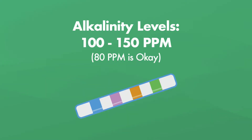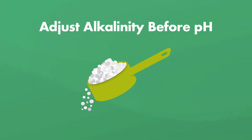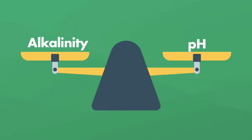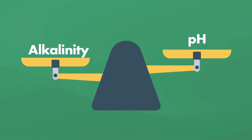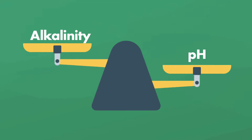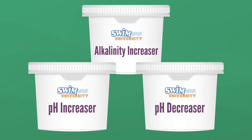Your alkalinity should be between 100 and 150 parts per million. Because alkalinity helps regulate your pH, adjusting it first may be enough to bring the pH in line. So always adjust your total alkalinity before your pH. But sometimes it's hard to get those two levels to balance — you'll adjust your alkalinity only to find it's messed with your pH, or you'll balance your pH only to realize your alkalinity is out of range.